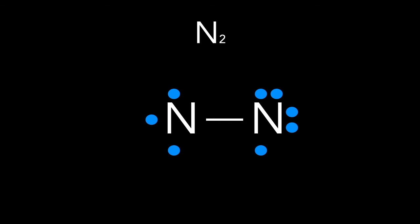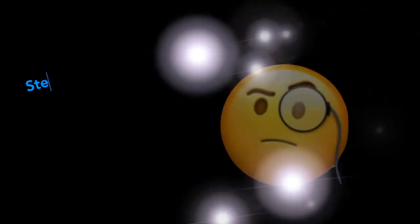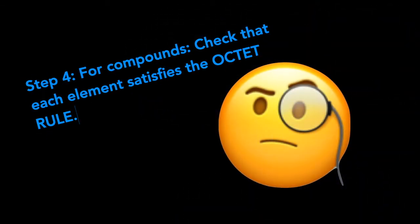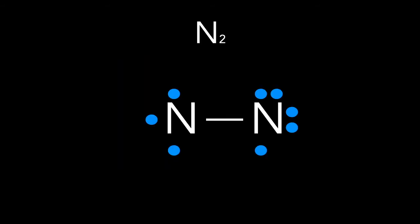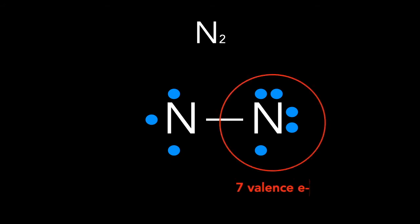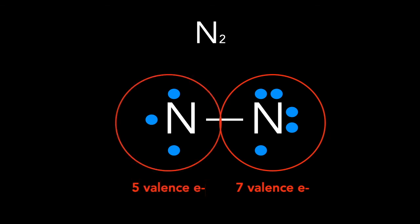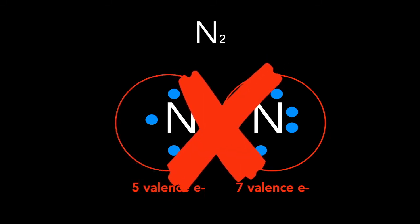Let's move on to the next step, which is important when drawing Lewis dot structures. Step four: for compounds, check that each element satisfies the octet rule. The nitrogen on the right has seven valence electrons and the nitrogen on the left only has five. Both do not satisfy the octet rule because we need each element to have eight valence electrons around it in order to be stable.